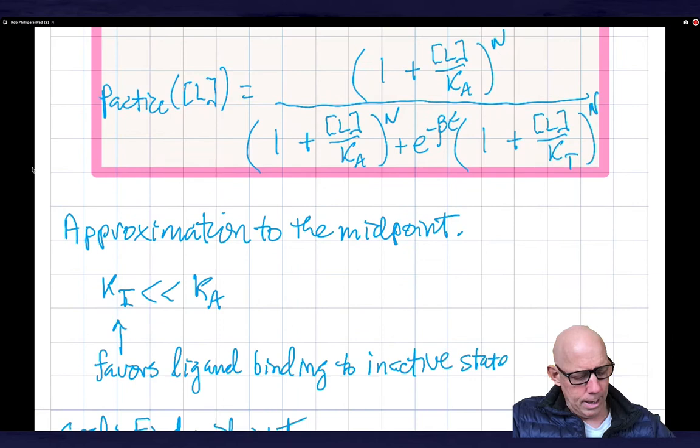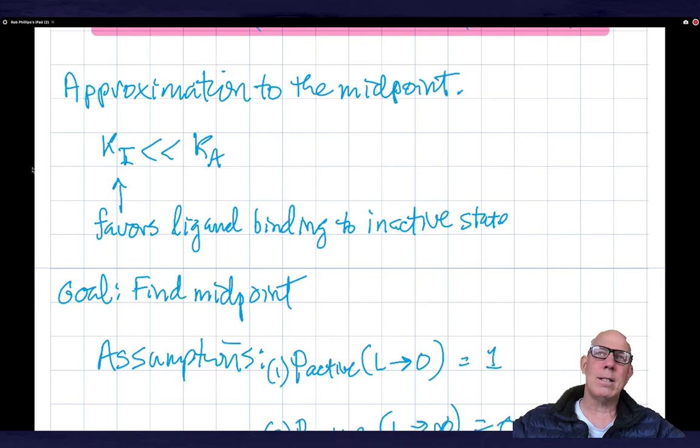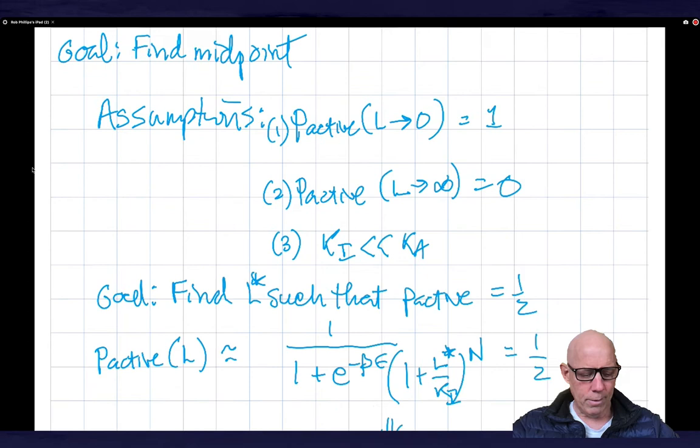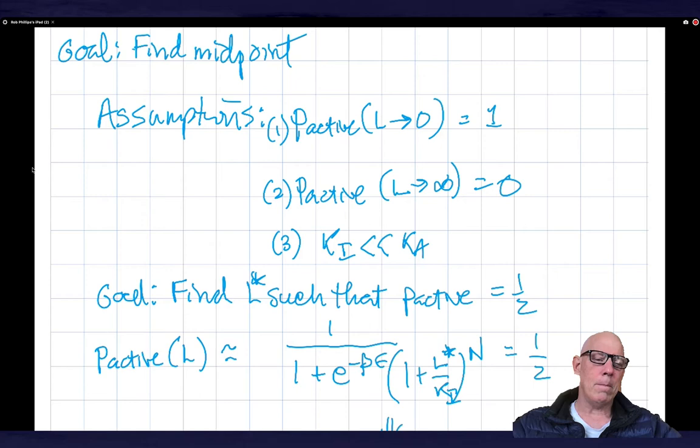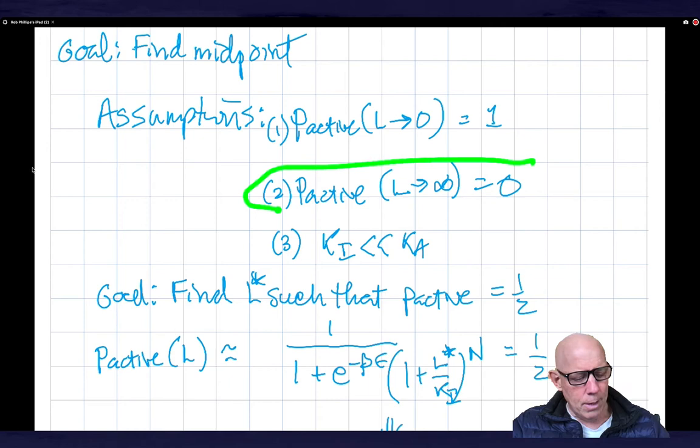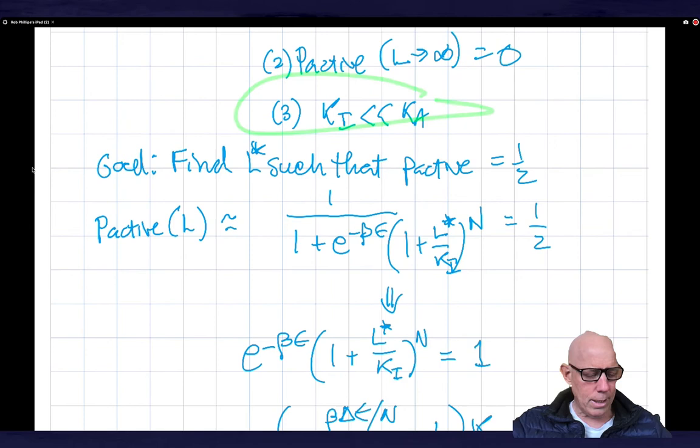So I wanted to say a little bit about the calculation of this midpoint. So in order to do that, I want to just make a few remarks. So I've already written down a few ideas here. So approximation to the midpoint. We're going to find an approximate formula for that midpoint. And in particular, what I want to show you is it depends on this parameter delta epsilon. So the way I want you to think of this is that the act of methylation is effectively changing the equilibrium between inactive and active in the absence of ligand. So approximation number one is that Ki is much, much less than Ka. Why would I say that? I would say that in the sense that the chemoattractants prefer to bind the inactive state much more than the active state.